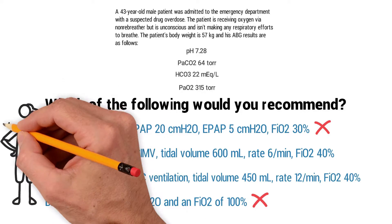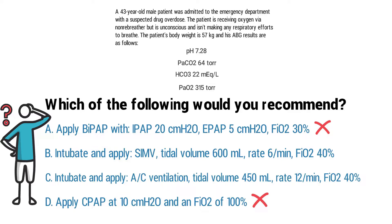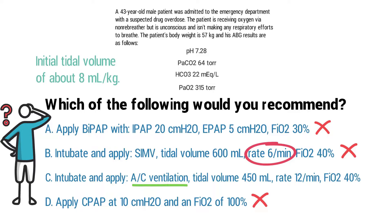Now we just need to figure out which remaining option is the best for this patient. SIMV mode at a rate of 6, which by the way is very low, is only going to provide partial ventilatory support, so we can rule that one out as well. The best option for this patient is assist control ventilation at a normal rate with an initial tidal volume of about 8 milliliters per kilogram of body weight.